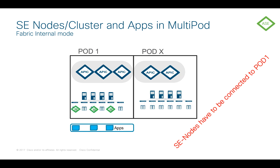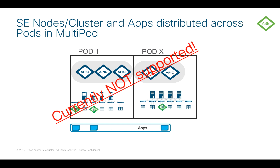What about if you have multi-pod? All three nodes must be connected to pod one. We don't support having, say, a couple of nodes in pod one and another node in pod two. That will likely come in the future, but as of March 2020, everything has to be in pod one, so keep that in mind when you rack and stack these systems.